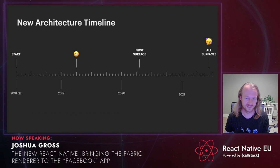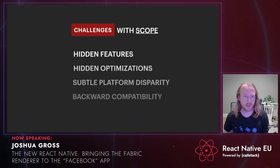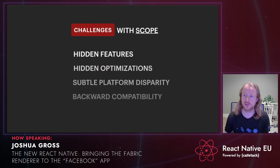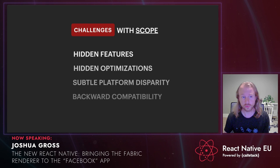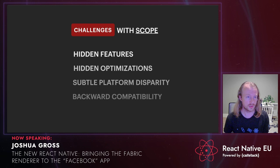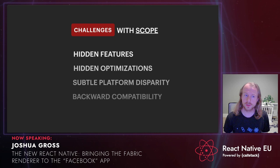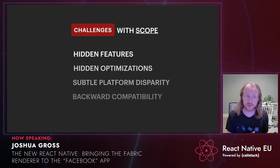What challenges did we face? First, challenges of scope. The full scope of the projects wasn't realized until about a year into the migration, and it expanded a lot after investigation went underway. Along the way, we discovered a lot of hidden features of React Native, as well as hidden and undocumented optimizations. We also found a lot of subtle differences between the Android and iOS code bases — the vast majority not documented and not even intentional; they just accidentally drifted over time.